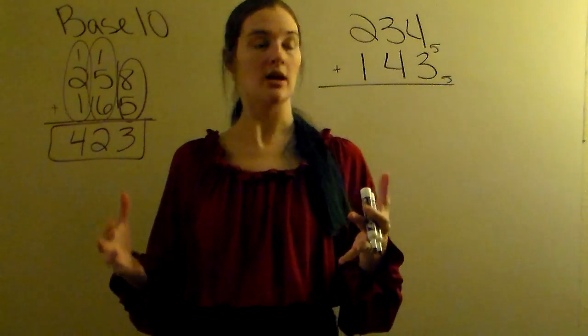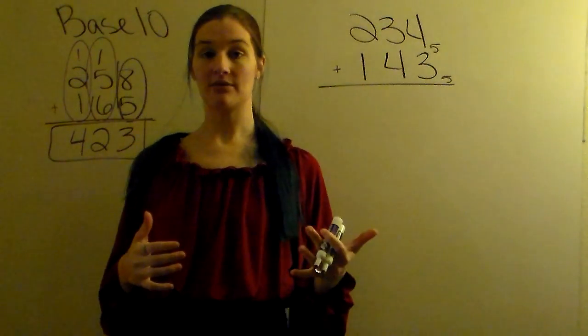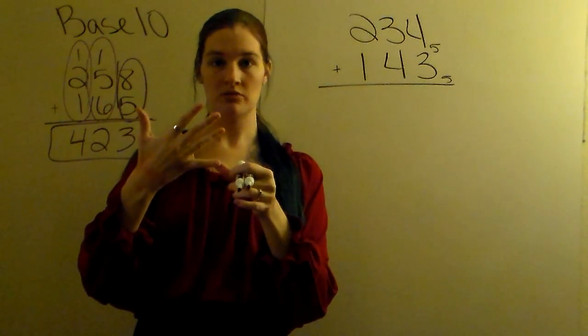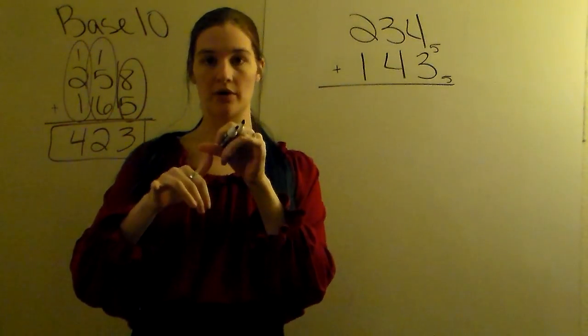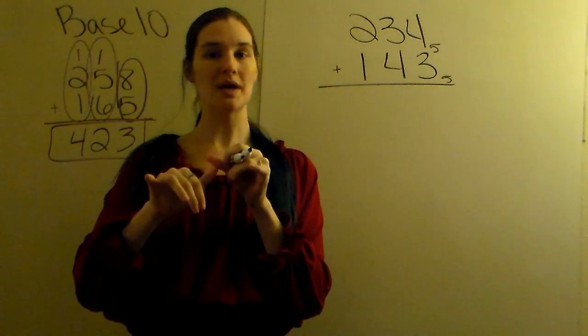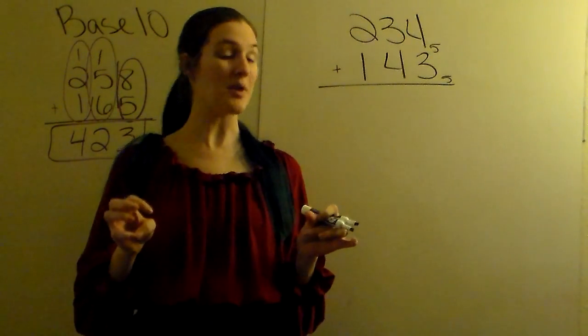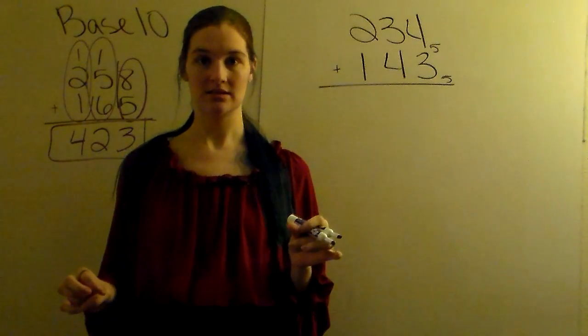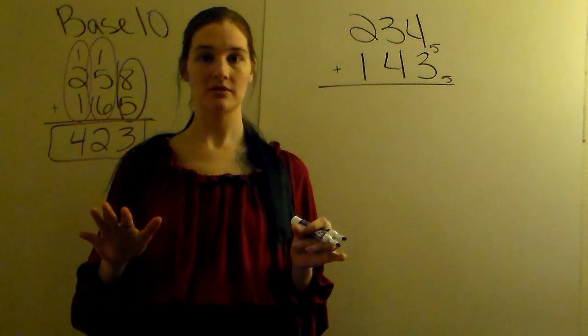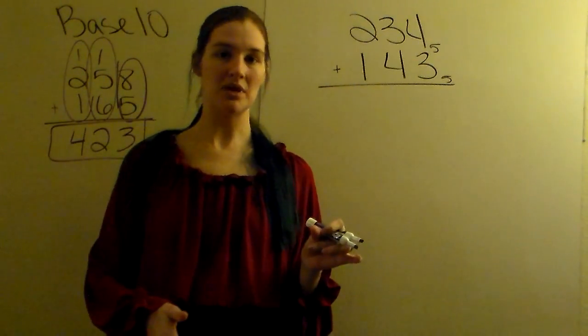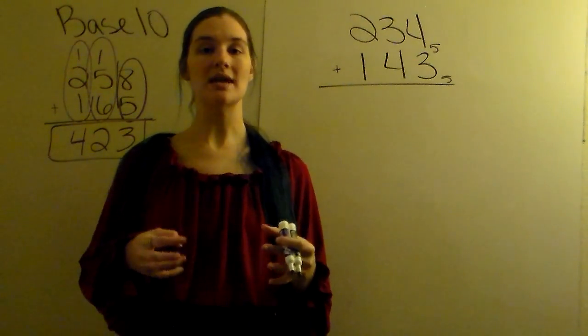In base 5, you're allowed 5 symbols: 0, 1, 2, 3, and 4. Once you hit the base, you've got to start combining symbols, so your base is 10. So the number 5 in base 10 is the number 10 in base 5.